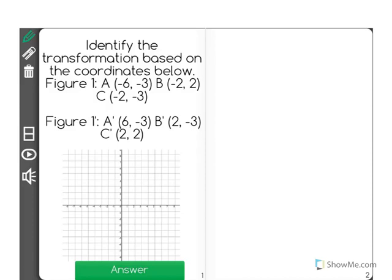Identify the transformation based on the coordinates below. Figure 1 gives us these three coordinates, A, B, and C, and figure 1' gives us the coordinates of the transformed figure. So what that means is we start with figure 1 and we end up with figure 1'.